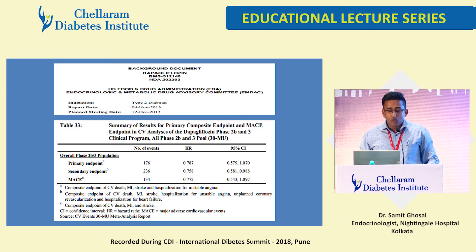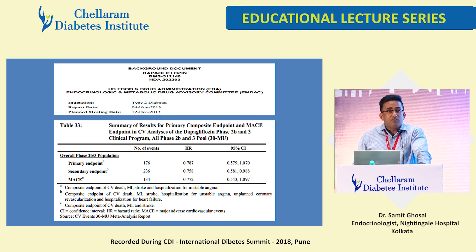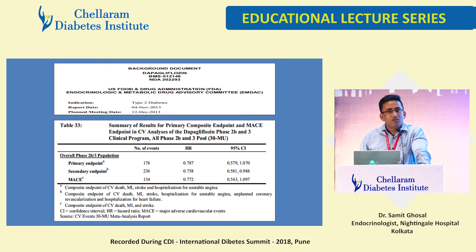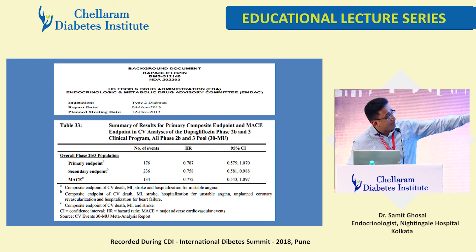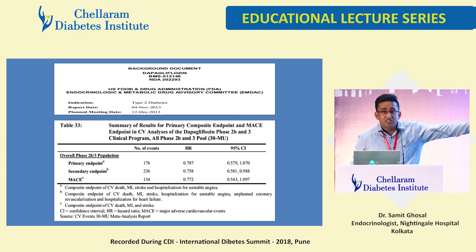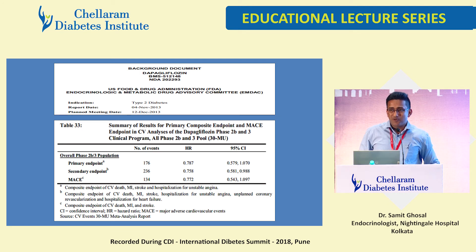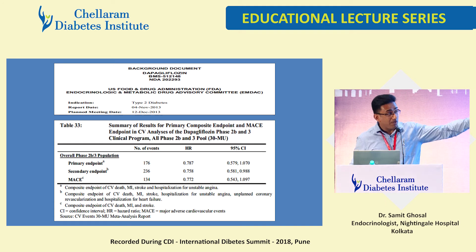With this backdrop, looking at Dapagliflozin raises an important question: CANVAS was opened up, EMPA-REG was opened up — why was DECLARE-TIMI 58 not opened up? The answer is simple. In the pooled Phase 2/Phase 3 data for Dapagliflozin, they were already analyzing 176 events — already in the green zone. There was no need to open DECLARE-TIMI 58. The upper limit of the confidence interval was 1.070, which is less than 1.3. Ideally, the FDA should have said there's no need to even do DECLARE-TIMI 58 — it's so robust just from the pooled data.